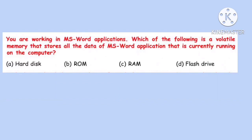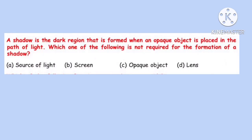Question 22. You are working in MS Word. Which of the following is a volatile memory that stores all the data of the MS Word application currently running on the computer? Volatile memory means memory that can keep information only while it is powered up. Correct option is C: RAM — Random Access Memory.